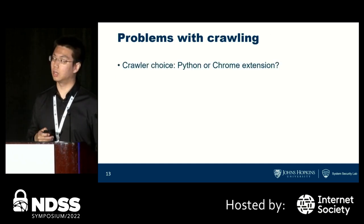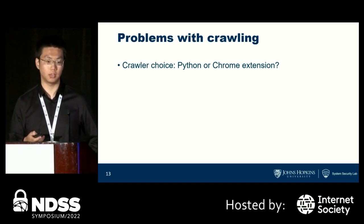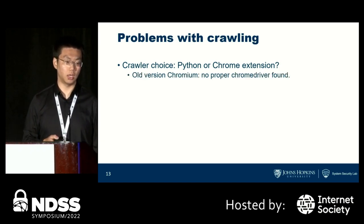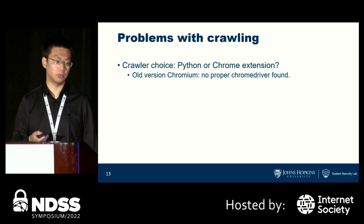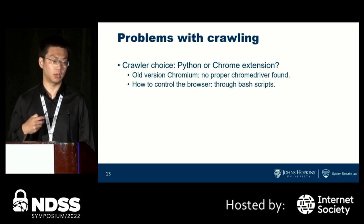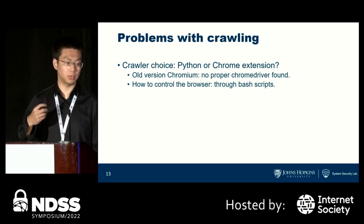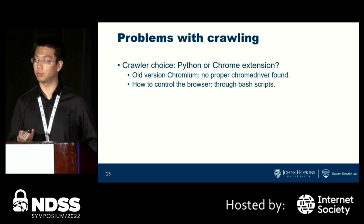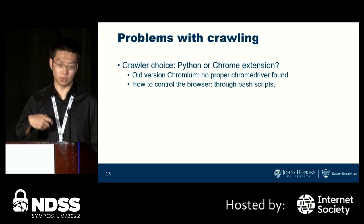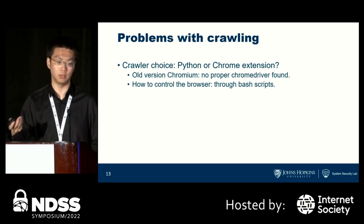We then started crawling real-world websites for measurement results. We hope these discussions will help researchers better conduct large-scale measurement studies. For crawler choice, there were two options: using Python or a Chrome extension. From prior experience, Python is more powerful for controlling and interacting with webpages. However, because we used an old version of Chromium, the proper Chrome driver version could not be found, so we wrote JavaScript for a Chrome extension we developed ourselves for crawling.